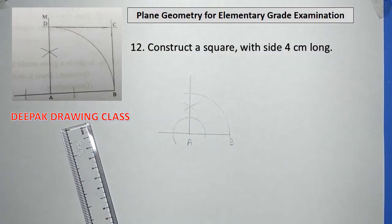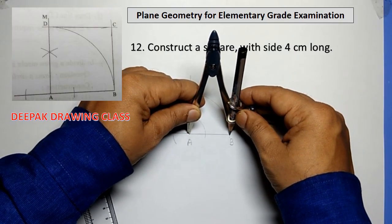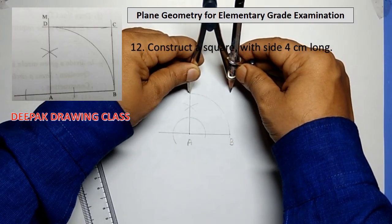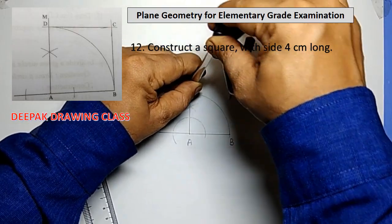Then, take a compass and with center A and radius equal to AB. Draw an arc intersecting the line AM at the point D.